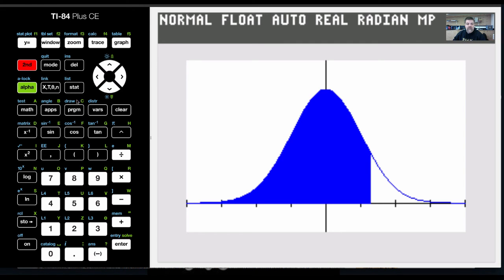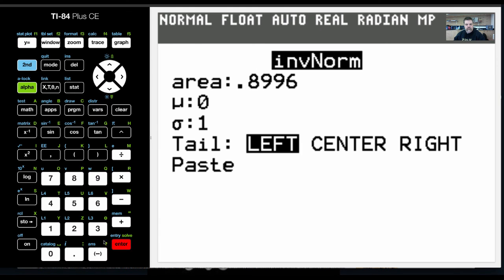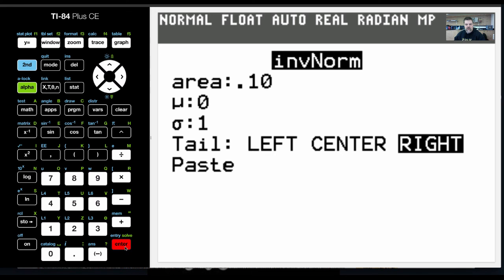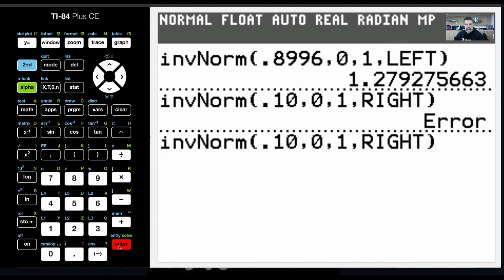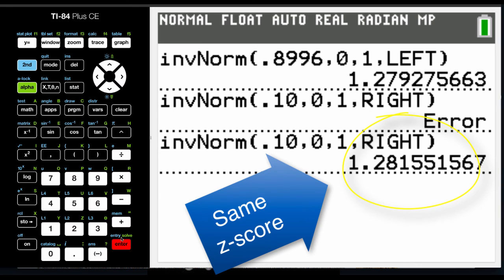So what I'm going to do is I'm going to come in here and hit second vars to pull up my distributions. Let's do 0.1. We'll choose right, and then we will paste that. Okay. Let's do it.